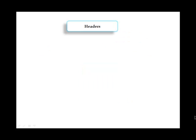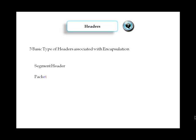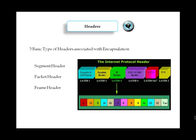Let's take a look at the headers. With encapsulation, there are basically three headers: the segment header, which is attached at the transport layer; the packet header, which is attached at the network layer; and the frame header, which is attached at the data link layer.